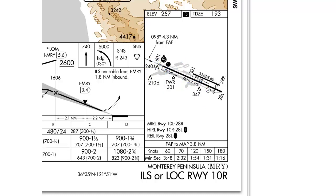Next, we have the arrow indicating the direction that the approach brings you in. This arrow is for all approaches designated straight in for a runway. In this case, the arrow shows a 098-degree track and 4.3 nautical miles from the final approach fix to the runway. For a straight-in approach, it only needs to be aligned within 30 degrees of the runway centerline. Therefore, you may see an arrow coming at the airport from an oblique direction rather than straight on.